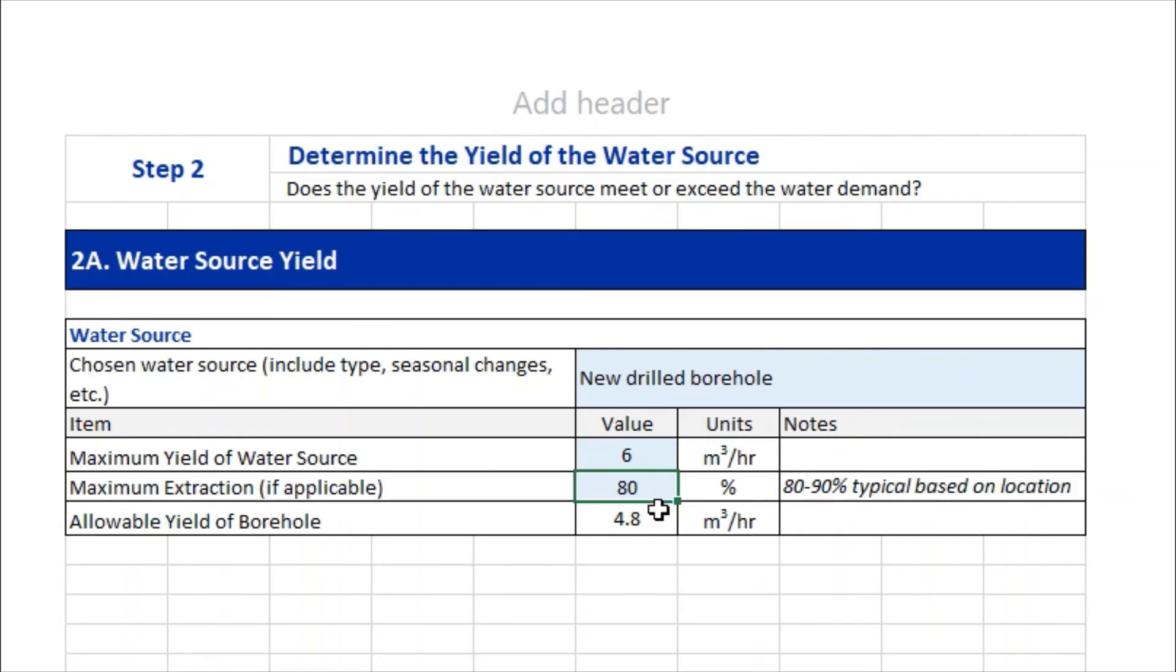In this case, it was 80%, and then six multiplied by 80% gives the allowable borehole yield, which is 4.8 cubic meters per hour.